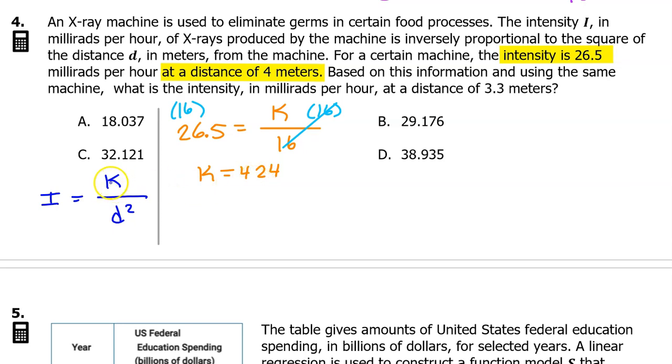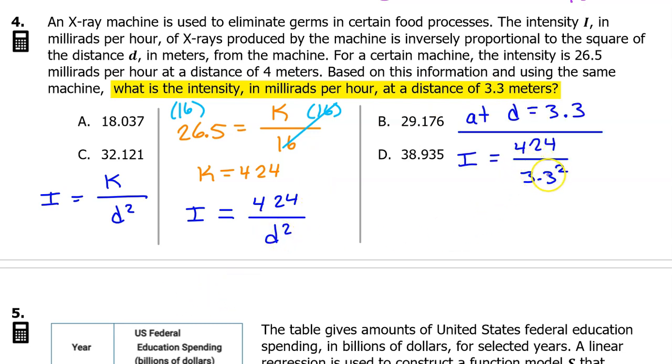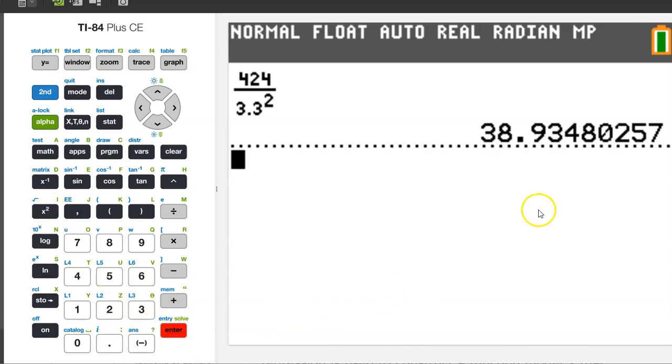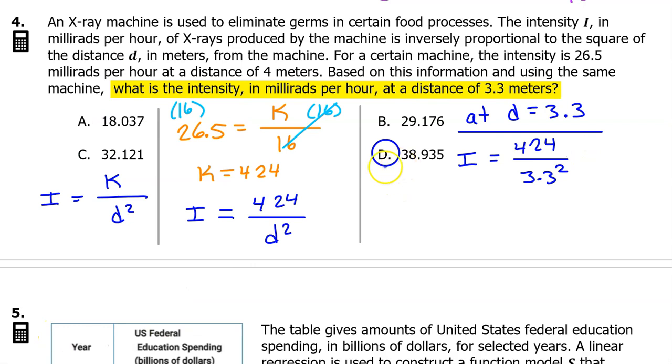Substituting this value back into our original setup gives us i equals 424 over d squared. Now we can use the complete formula to answer the question, what is the intensity at a distance of 3.3 meters? So we will just substitute 3.3 in for d. And we can just type this into the calculator. That's 38.935. So the answer is D.